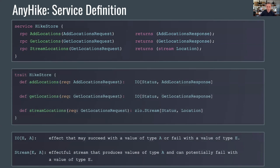ZIO gRPC as an SBT plugin generates a trait with a Scala method for each RPC, taking the request and returning an effect — an IO that represents that action. The IO type takes two type parameters, E and A, representing an effect that either succeeds with a value of type A or fails with a value of type E. So AddLocations can fail with a gRPC Status or succeed with an AddLocationResponse. GetLocations has a similar structure. StreamLocations returns a ZStream that can fail with a Status or produce a sequence of locations — it can fail at any point in time and the stream is potentially infinite.